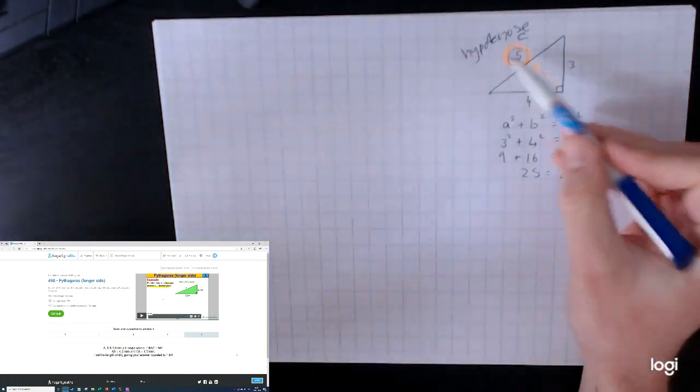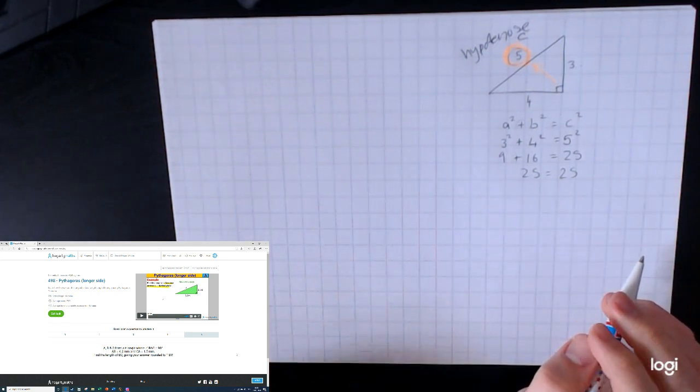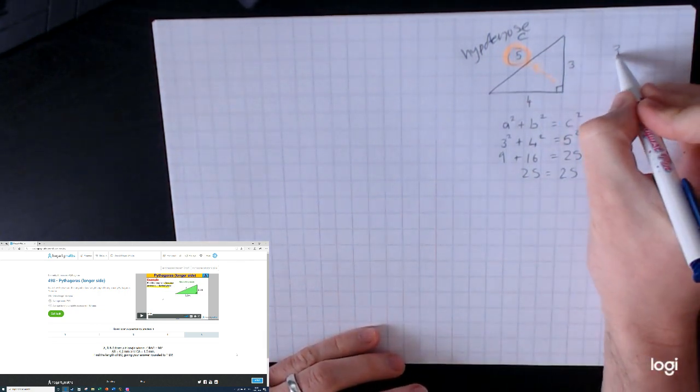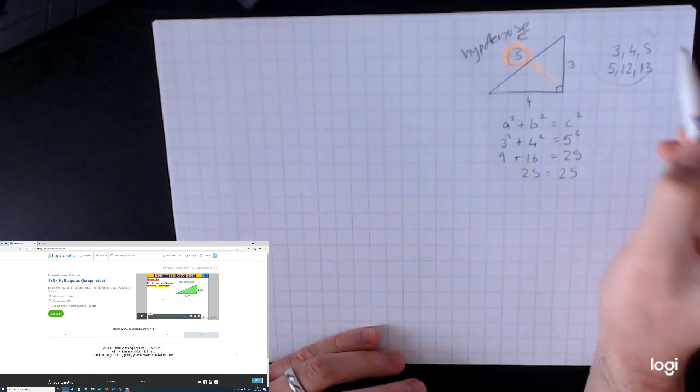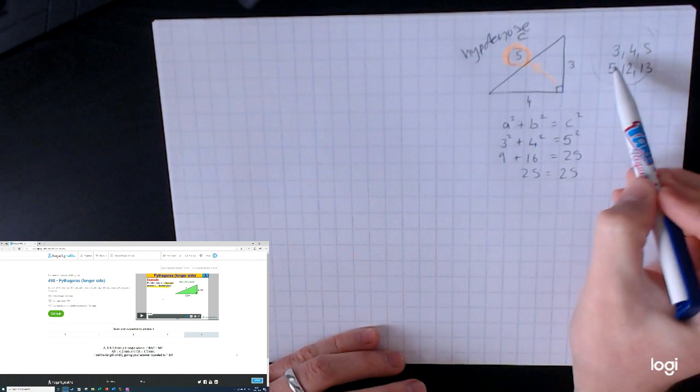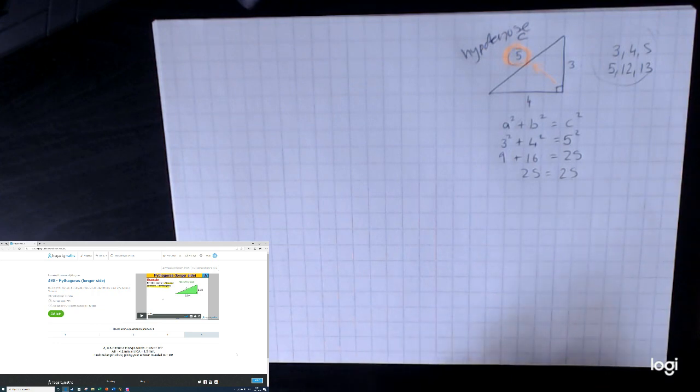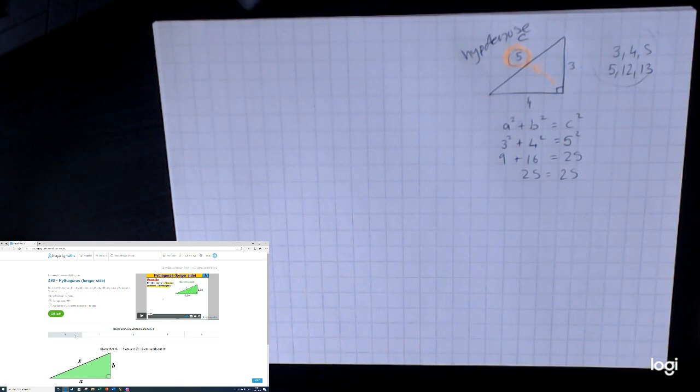Three, four, five is a non-calculator Pythagorean triple, so you can expect to find Pythagoras on both your calculator and your non-calc. If it's on a non-calculator at foundation level, expect to see your Pythagorean triples: three, four, and five; five, twelve, and thirteen are your most common ones, or any multiples of these. On a higher paper, you absolutely can have Pythagoras again and I would very much expect to see it with surds. But I wanted to have a look at some questions that are going to pop up on video 498 and just talk you through them today.